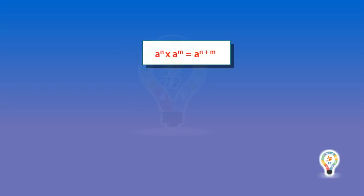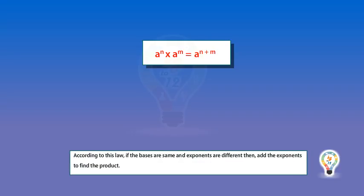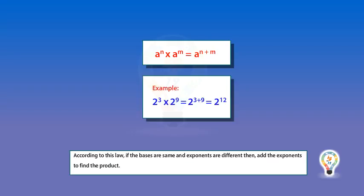There are some laws to solve exponential notations easily. The first law is a to the power n times a to the power m equals a to the power n plus m. According to this law, if the bases are same and the exponents are different, then add the exponents to find the product.